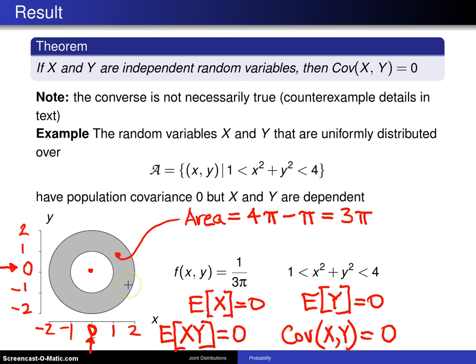Well, you look at this support, and that is not a product space. That is not a rectangular region. So we know we have dependent random variables. So this is a quick counterexample that shows you that the covariance being 0 does not imply that you have independent random variables.